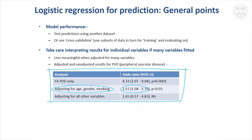But you might think that was appropriate — age, gender and smoking, they're not medical measurements, so you do want to be sure that the groups you're comparing for peripheral vascular disease are similar in terms of age, gender and smoking, so that probably was a sensible model.